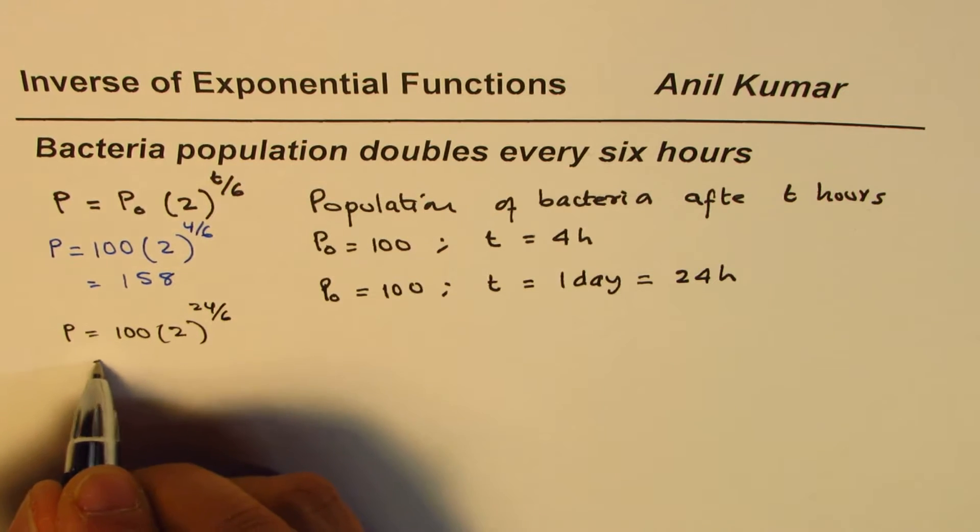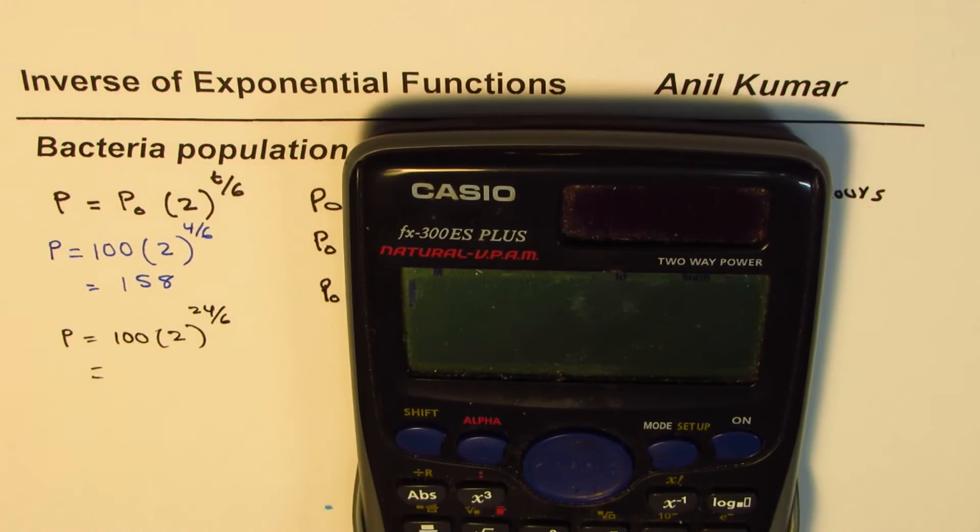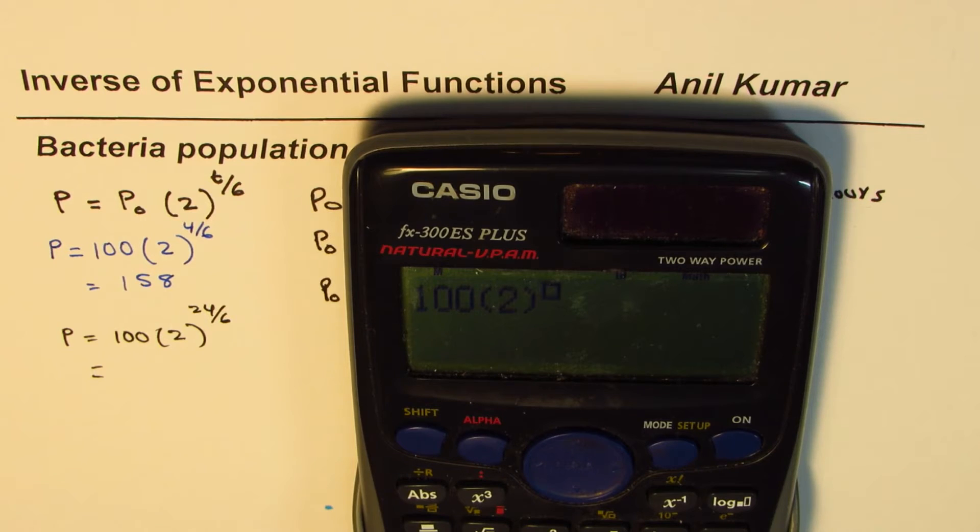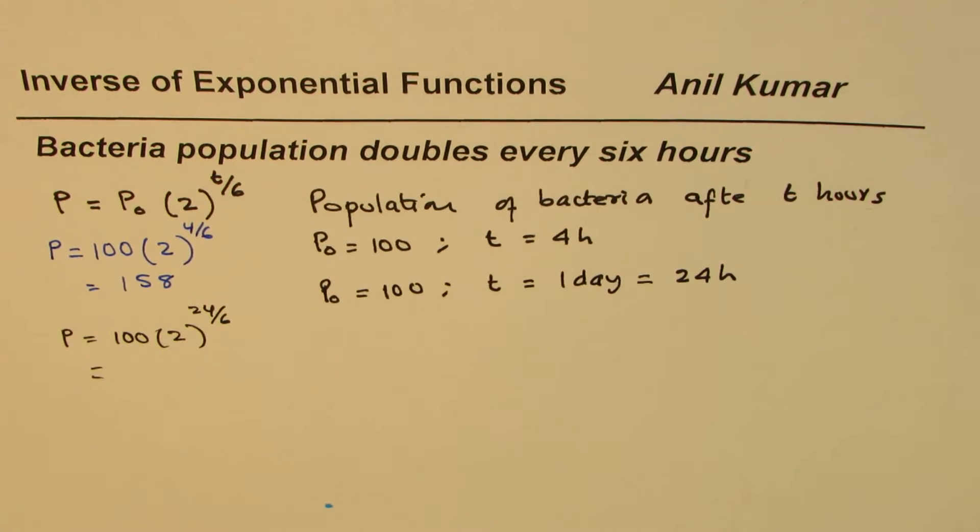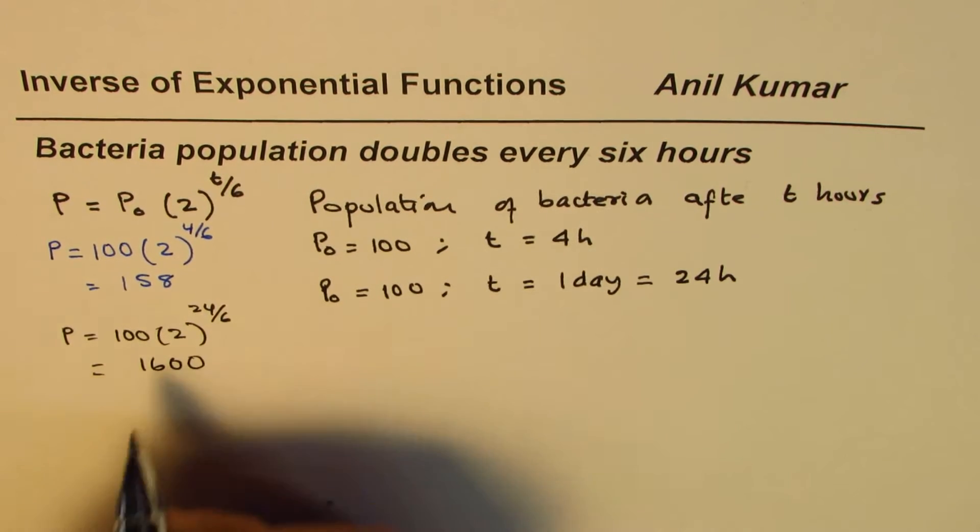And then again use the calculator and find the answer. Finding population with this expression is not difficult. So to the power of, let's say, 24 divided by 6.